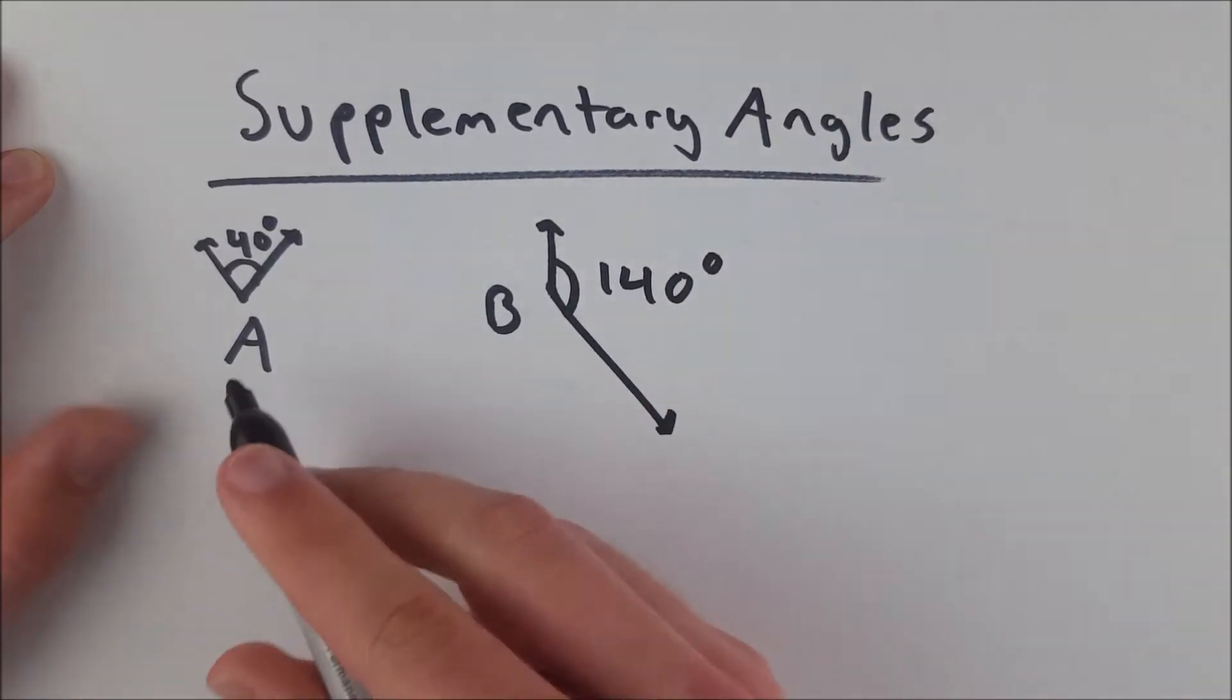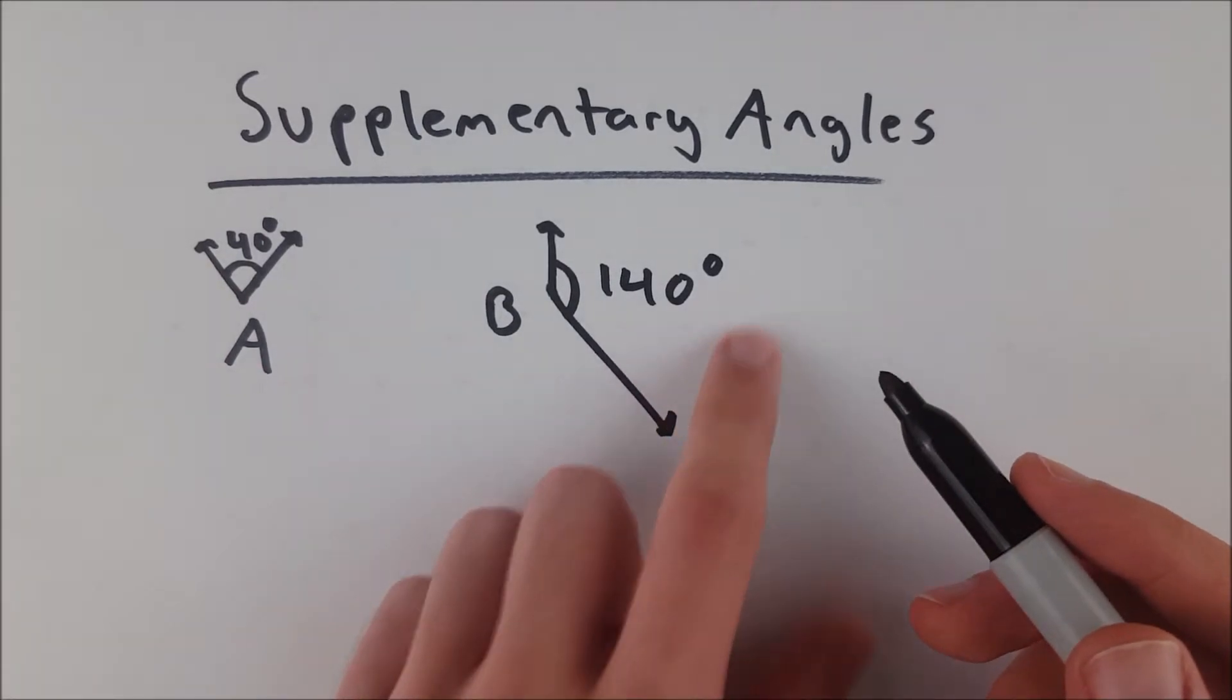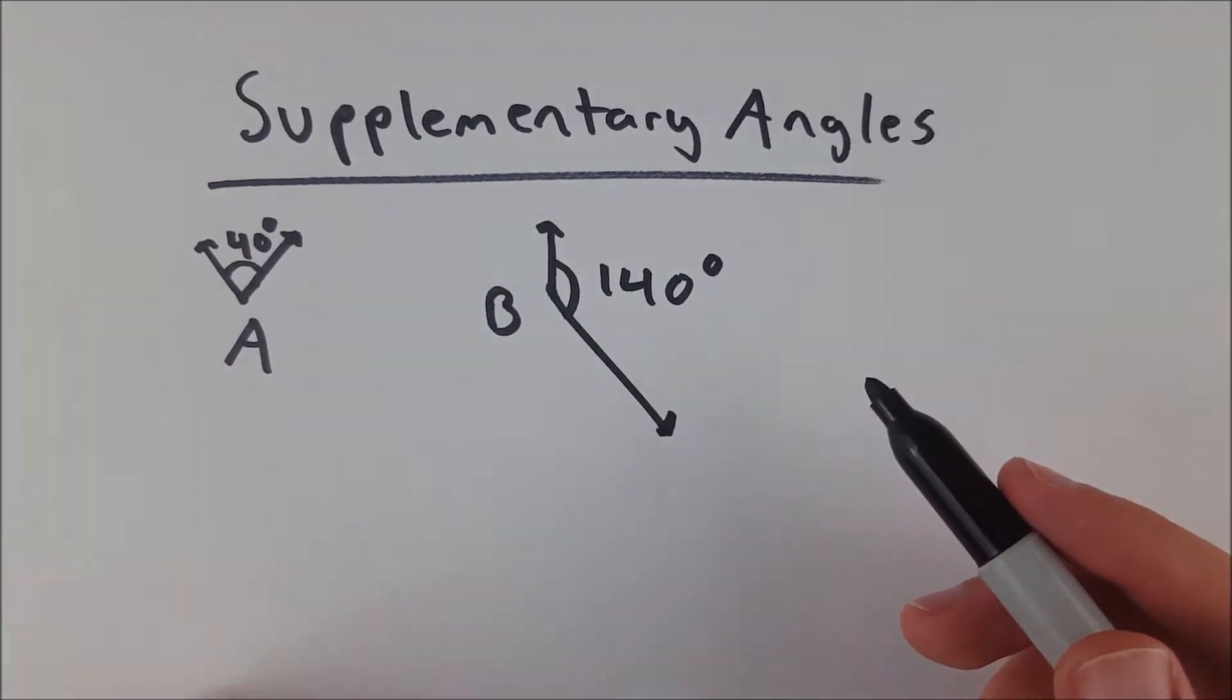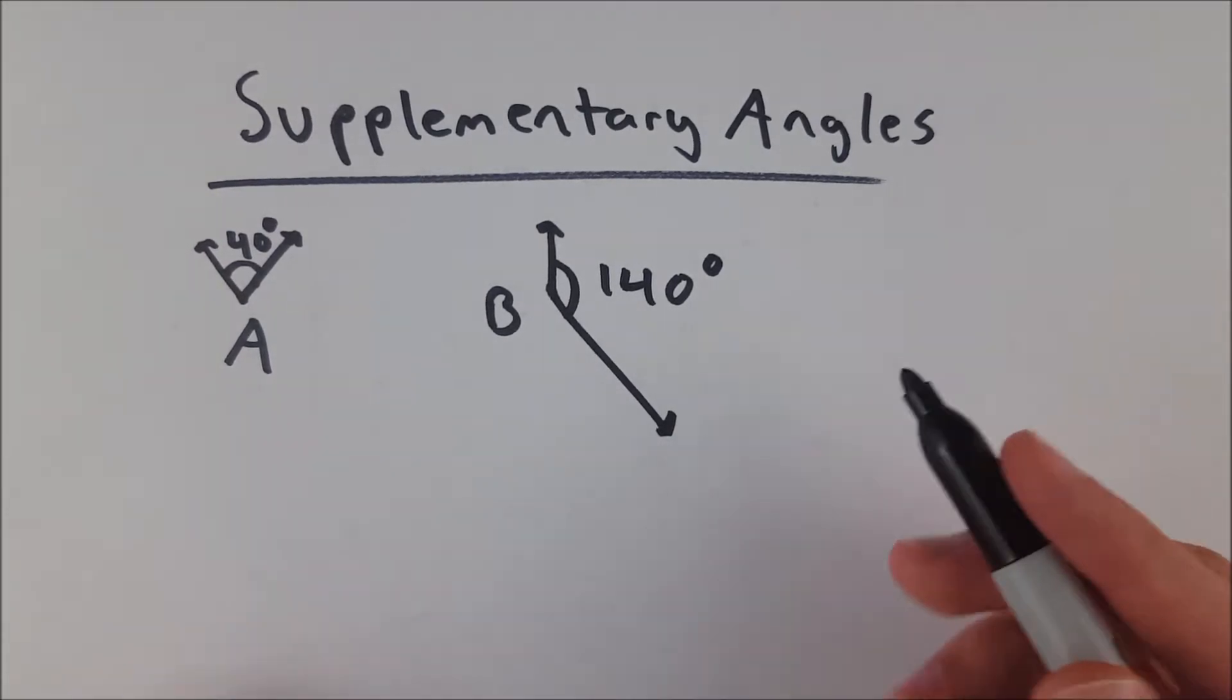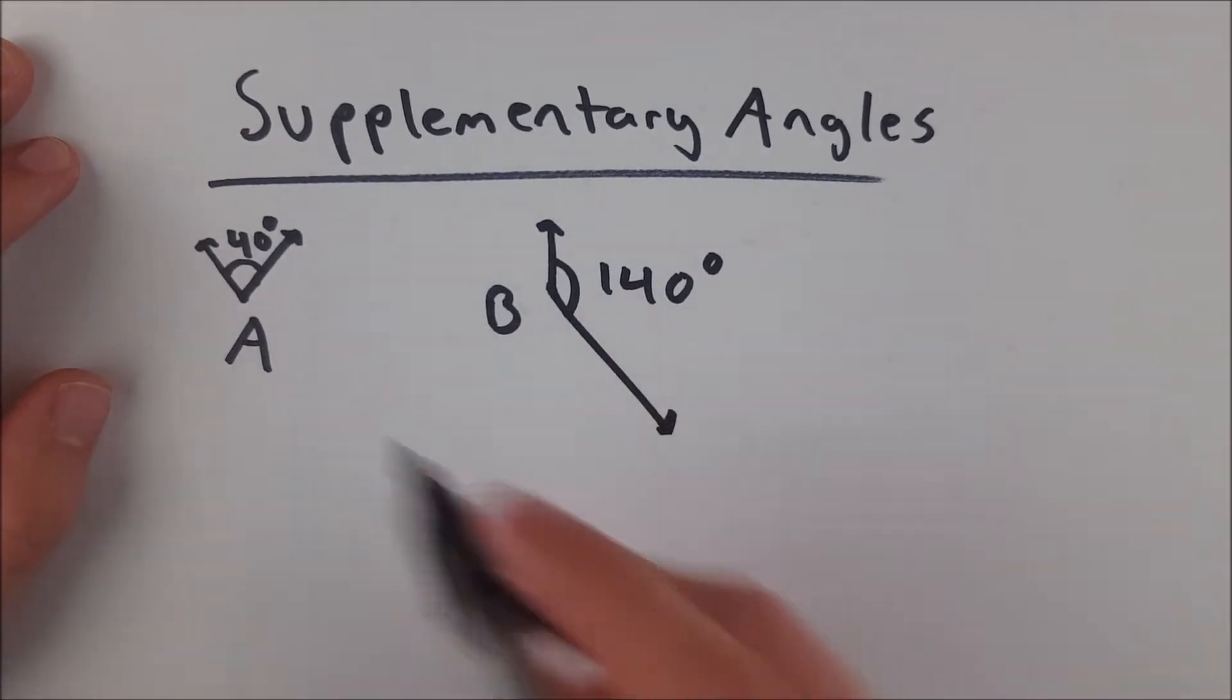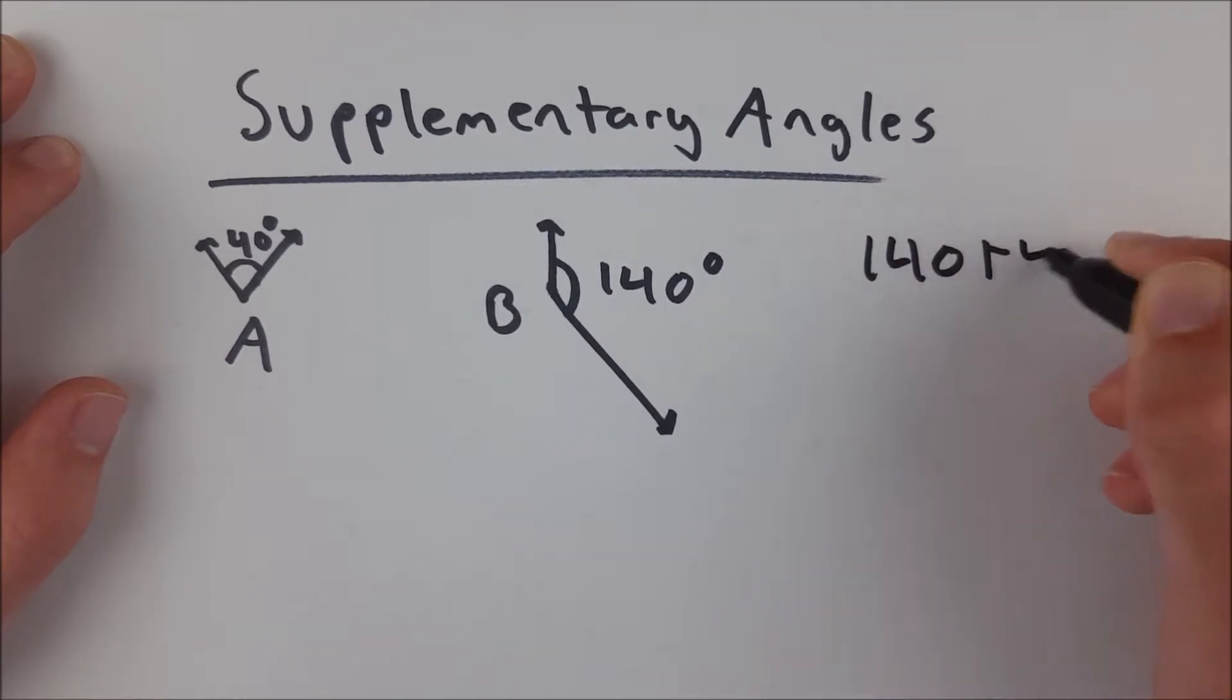If it's supplementary to A, then you know it has to have a measure of 140, because 140 plus 40 is 180. So B plus A, when we're talking about their measures, has to equal 180 degrees, which you see here, 140 plus 40 is 180.